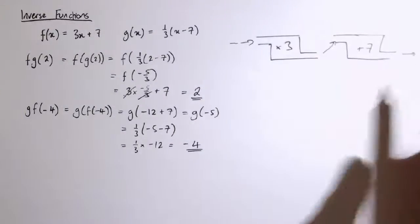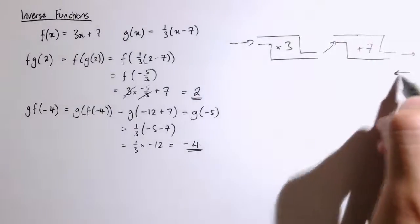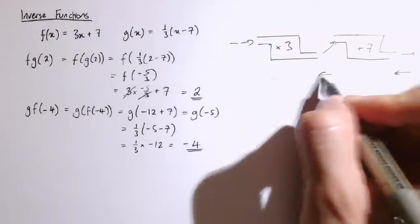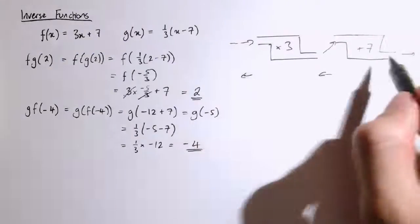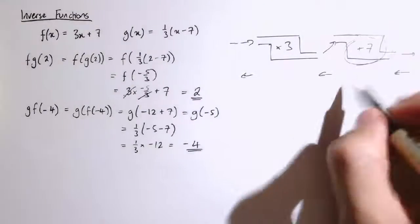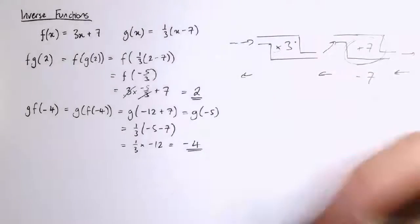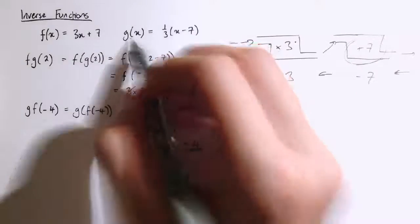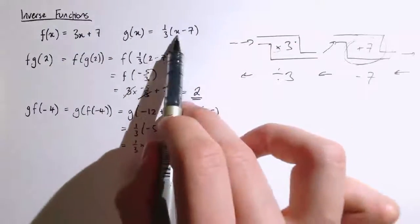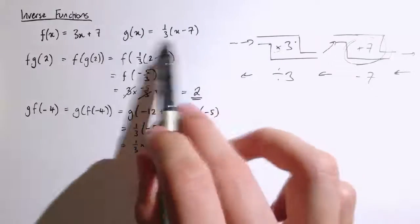So actually, if I wanted to undo the effects of these two machines, I would just have to go in the opposite direction. And so, the first thing I would do is to put it back through this machine and undo the effect of adding 7, so it would be minus 7 instead. And then instead of multiplying by 3 to undo that, I would divide by 3, and that's what this function here does. As you see, it does x minus 7, that's subtracting 7, and then it divides by 3. That's the one-third outside there.